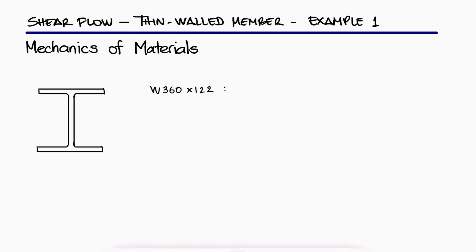For a W360 x 122 rolled steel beam subjected to a 250kN vertical shear, what is the shearing stress at point A, 105mm away from the edge? This is the first example for the Shear Flow and Thin-Wall Member's main video.